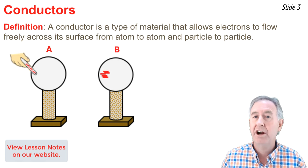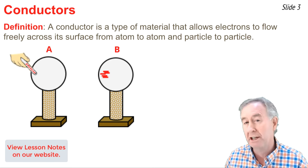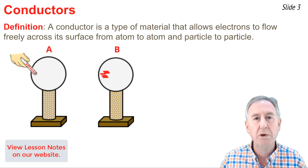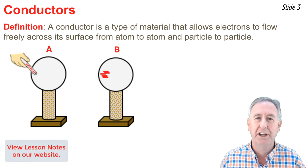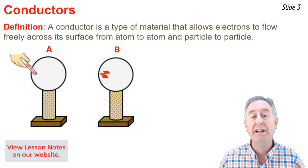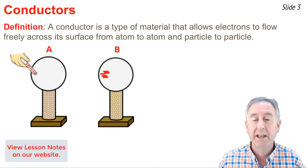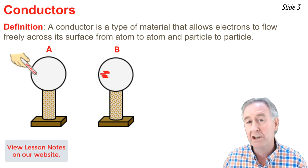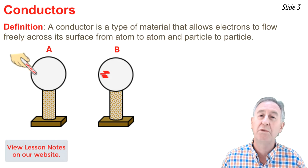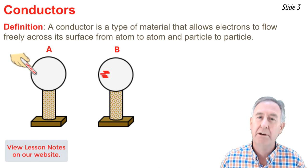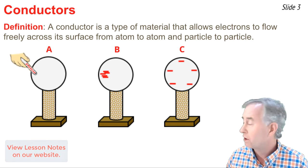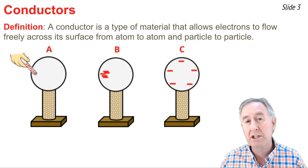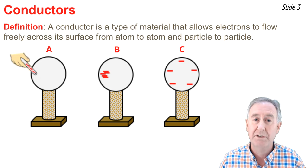Upon touching, there are excess electrons deposited upon the sphere, all located at the point of contact. These electrons don't like one another because, as we know, like charges repel. And so they would like to distance themselves from one another. The fact that this sphere is a conductor means those electrons can move freely across the surface from atom to atom and particle to particle. The result is that those electrons become uniformly distributed about the surface of the sphere.